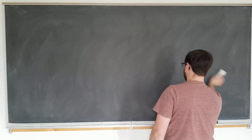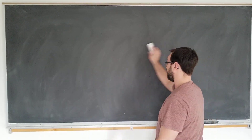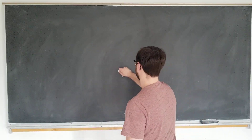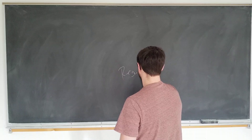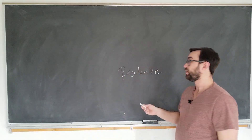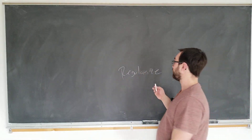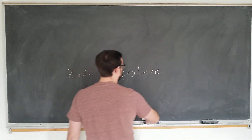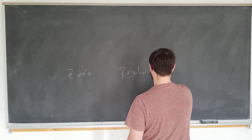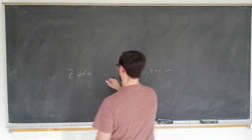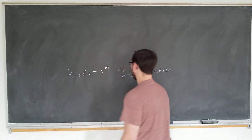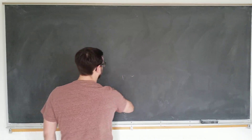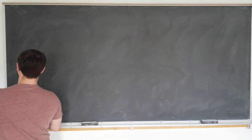First of all, we're going to look at the simplest possible infinite product to regularize — that's what we call it when we use the zeta function. The technique is known as zeta regularization. That's what the technique is called, and we're going to be doing that today.